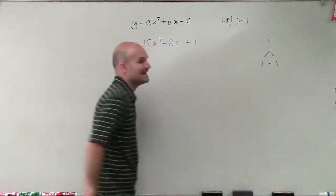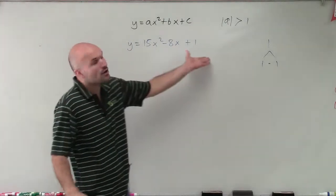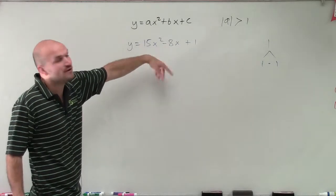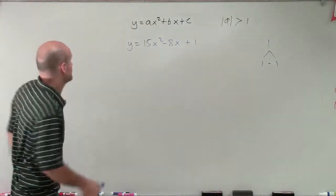So therefore, we know that the last two numbers have to be 1 and 1, or they also could be negative 1 and negative 1. And actually, since we know that our b is going to be negative, we know that probably negative 1, negative 1 is going to work.